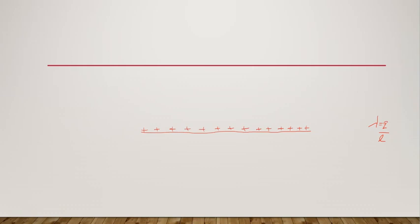To find the intensity of electric field at a distance r — at a point P — we need to draw a Gaussian surface as per Gauss's law around the line. In this case, the best Gaussian surface will be in the form of a circular cylinder of radius r and length l.